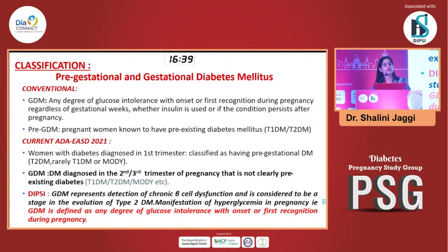This was irrespective of what the treatment modality was, whether it was managed by insulin or not, and whether the condition persisted beyond pregnancy or not. Pre-gestational diabetes was applied to anybody who said 'I have type 1 diabetes or type 2 diabetes before pregnancy' and then comes in pregnant.